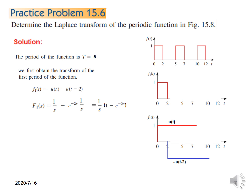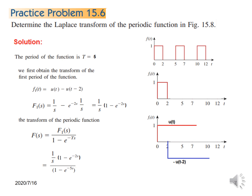This is the transform for one time period f1(t). For the whole periodic function, we apply the periodicity formula: F(s) = F1(s) / (1 − e^(−Ts)). With T=5, we plug in F1(s) and 1 − e^(−5s), then rearrange to get the final answer for this practice problem. I hope you got an understanding of how to solve this type of problem. Thank you.